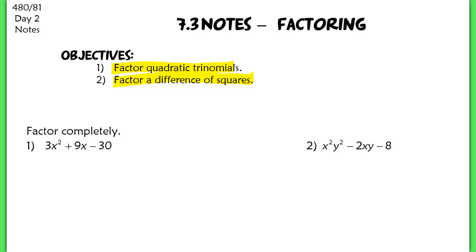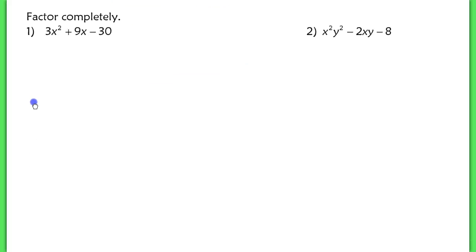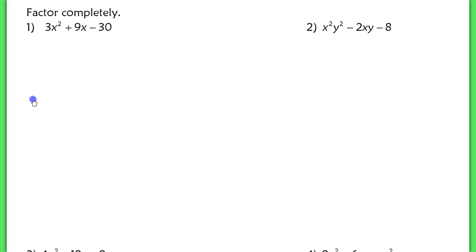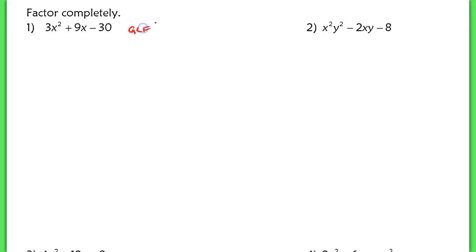In question one, this is a total review of stuff that you've seen already. It could be difficult right away if you try to find two numbers that multiply to negative 30, or to negative 90, and add up to 9. You do more work here than necessary, because if you just factor out a GCF — please make sure you're always looking for a GCF first.